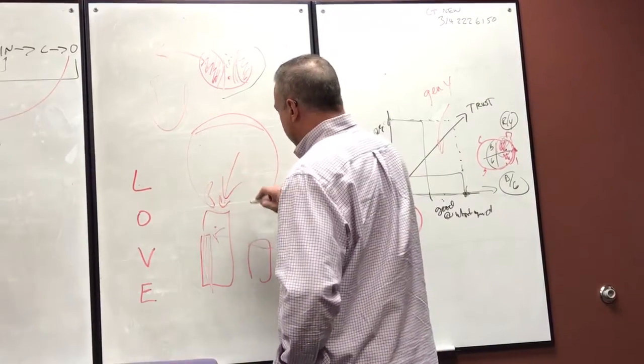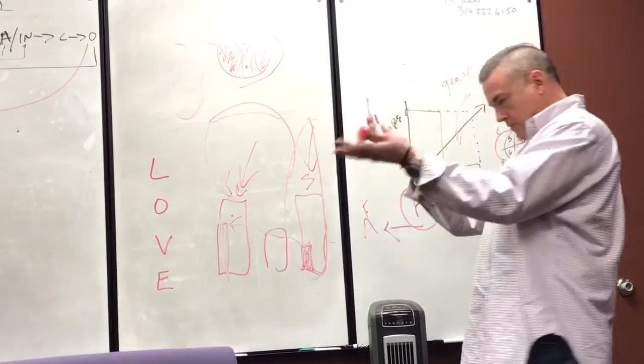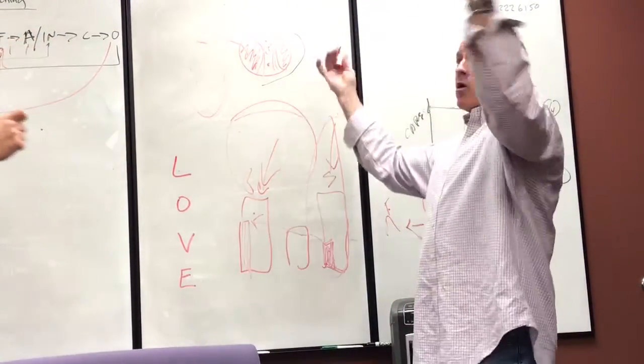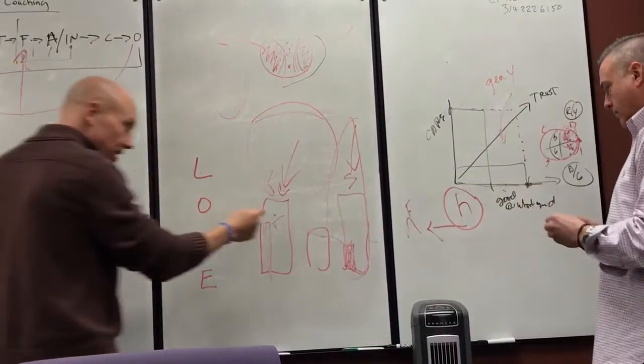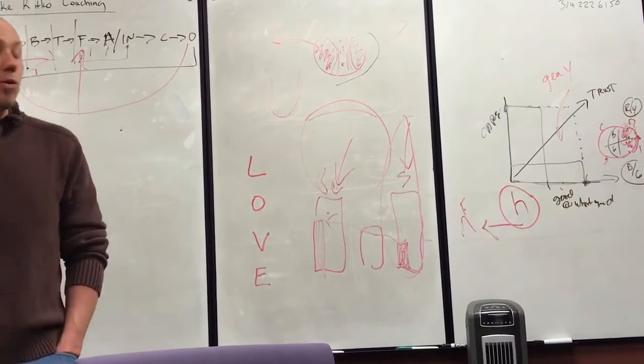You're consciously doing that, but subconsciously you may not be that way. So that's where somebody can go from here to here, and that's why your thing moves. This looks at your conscious, we look at your subconscious.